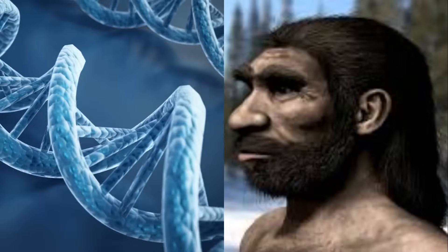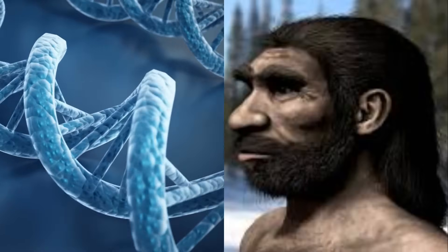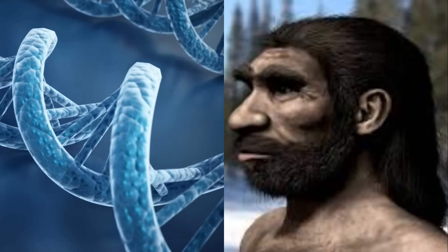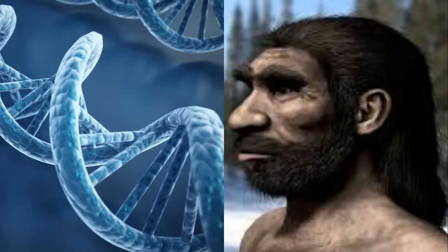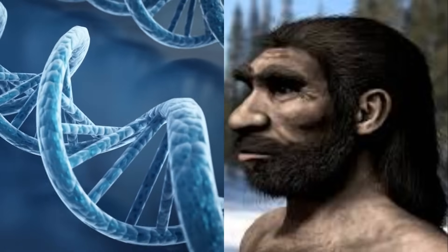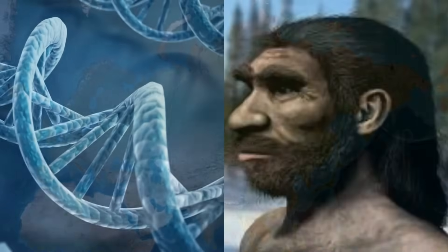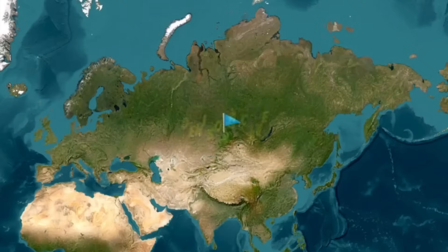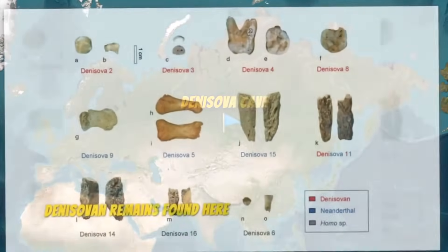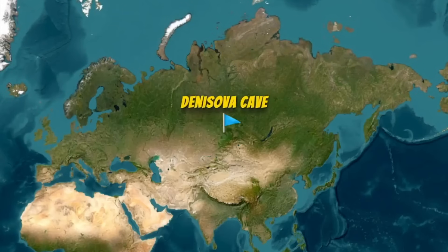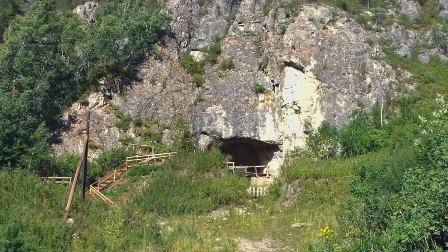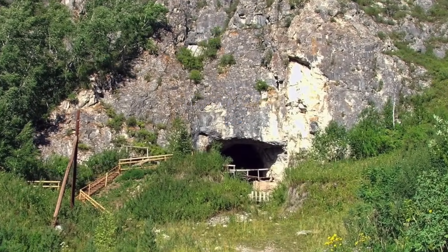Another fascinating example concerns Denisovans. When we talk about Denisovan DNA in modern Europeans, we're really discussing a complex genetic story that stretches across tens of thousands of years. Even though the amount of Denisovan DNA in Europeans is quite small — only about 0.1% to 2% on average — it carries a wealth of history about ancient interactions between archaic human species and early modern humans.